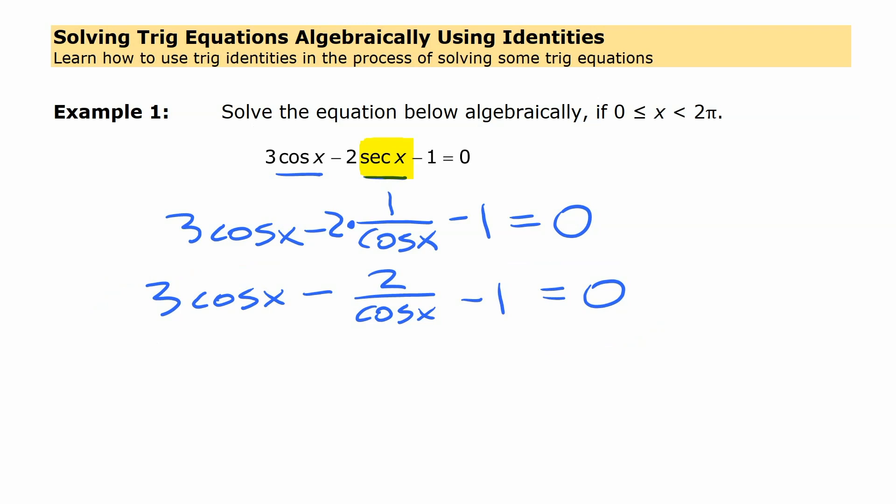Now before we go further, let's recognize here this 2 secant x. A common mistake that people make is they change 2 secant x not to 2 over cos x, but often someone changes that to 1 over 2 cos x. The 2 doesn't end up on the bottom there. It's just the secant that ends up on the bottom. So make sure you don't make that mistake while you're working with this.